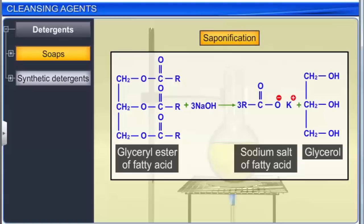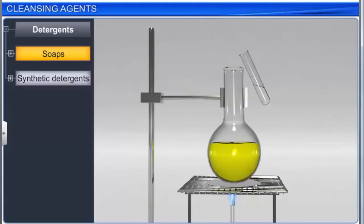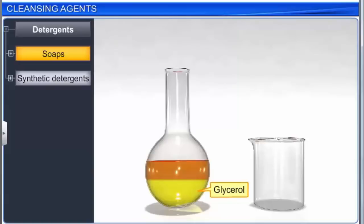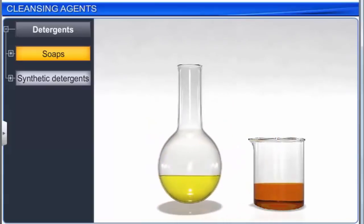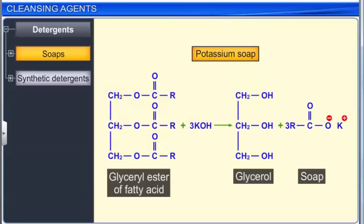In the saponification reaction, esters of fatty acids are hydrolyzed and the soap obtained remains in colloidal form. The soap and glycerol are separated by adding concentrated sodium chloride solution to the mixture. The glycerol dissolves in the salt solution, but the soap is insoluble and floats on the surface, from where it is removed. Glycerol from the solution is recovered by fractional distillation. Potassium soaps, produced by saponification with potassium hydroxide, are usually softer and more soluble than sodium soaps.